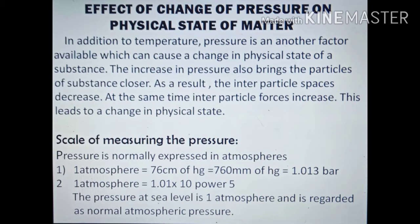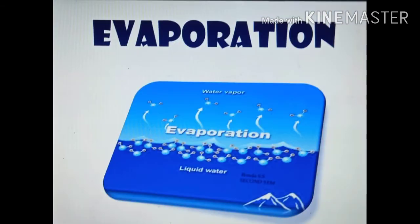Do you know the scales for measuring pressure? Pressure is normally expressed in atmospheres. One atmosphere equals 76 centimeters of Hg, equals 760 millimeters of Hg, equals 1.013 bar. Here, Hg (hydrogenum) means mercury. Pressure is also measured in pascals: one atmosphere equals 1.01 × 10⁵ pascals. The pressure at sea level is one atmosphere and is regarded as normal atmospheric pressure.